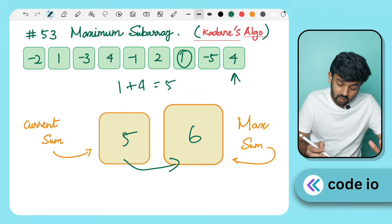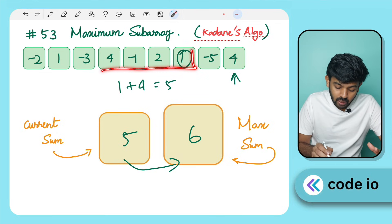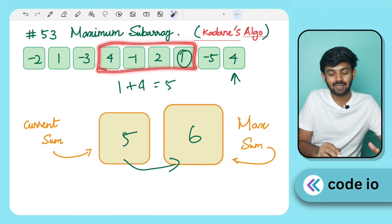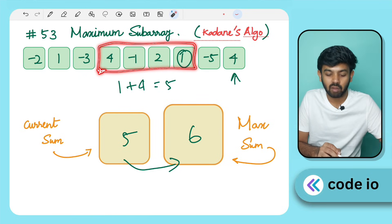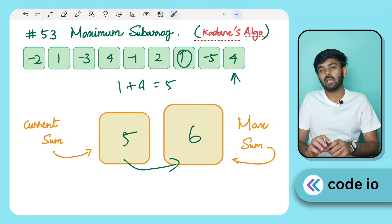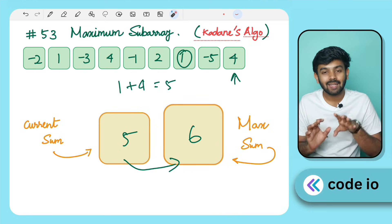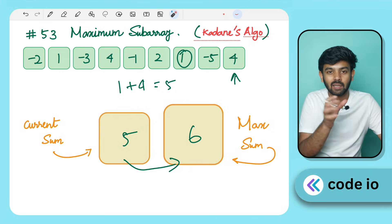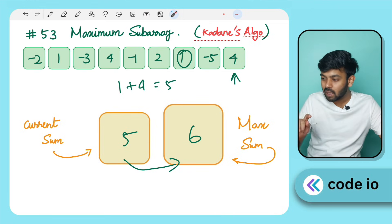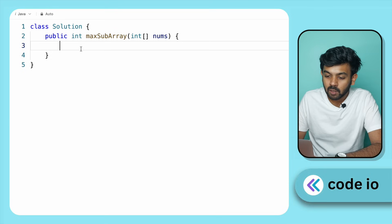So the final MaxSum is 6. That is the correct answer. This approach is known as Kadane's algorithm. We only need to track CurrentSum and MaxSum, updating them each iteration. It's simple and efficient.